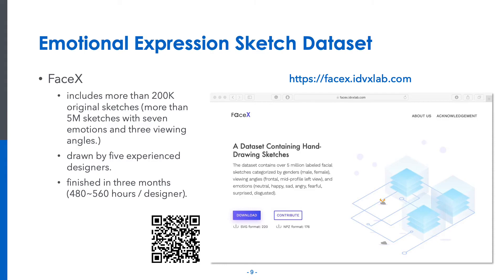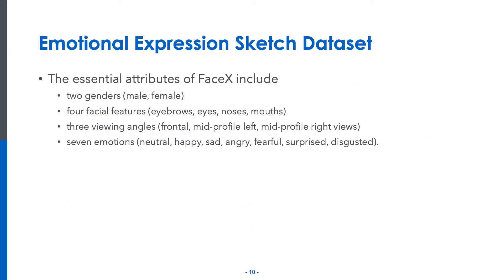Our approach to generating these expression sketches requires a stroke-based sketch dataset as the training set. To this end, we collected the first large-scale dataset FaceX, which consists of over 200k original face sketches in a vector format. FaceX was drawn by five experienced designers in three months and is available at the following link. To prepare the dataset, we first summarized its essential attributes including two genders, four facial features, three viewing angles, and seven emotions.